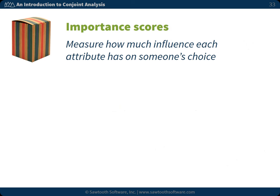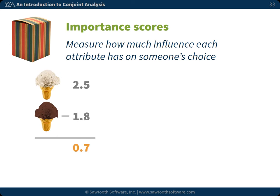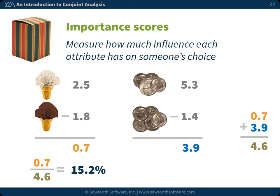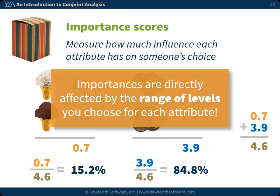Conjoint importances are a measure of how much influence each attribute has on people's choices. It is calculated by taking the best level of each attribute and subtracting the worst level, percentaged. For this particular respondent, we take the utility for vanilla and subtract the utility for chocolate to get 0.7. Then we select the best price utility and subtract the worst price utility, which gives us 3.9. We add those two subtotals to get 4.6. Then we figure out the percentage: dividing 0.7 by 4.6 gives 15.2%, and dividing 3.9 by 4.6 gives 84.8%. Importantly, importances are directly affected by the range of levels you choose for each attribute.